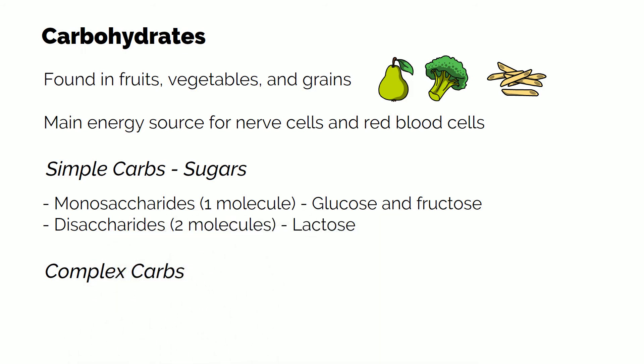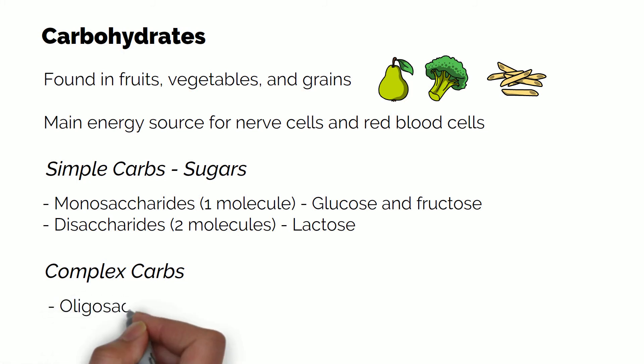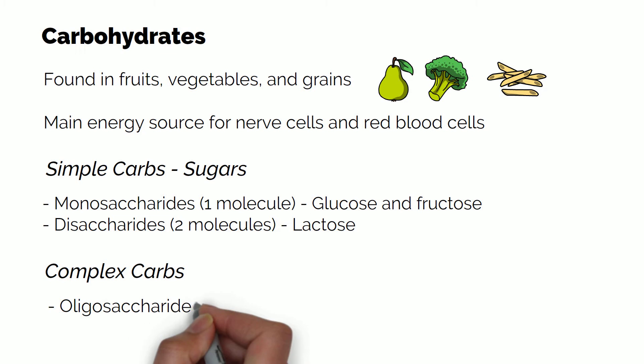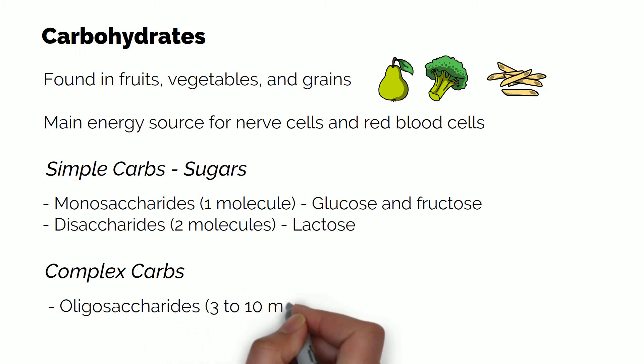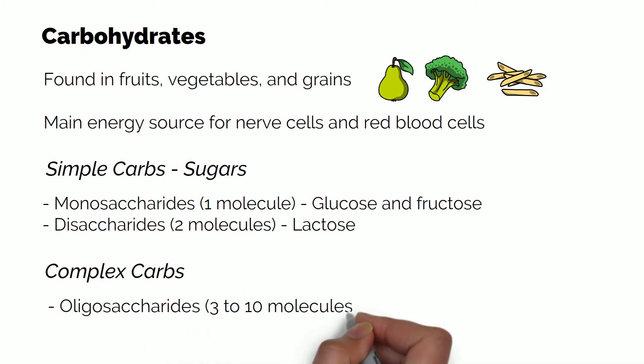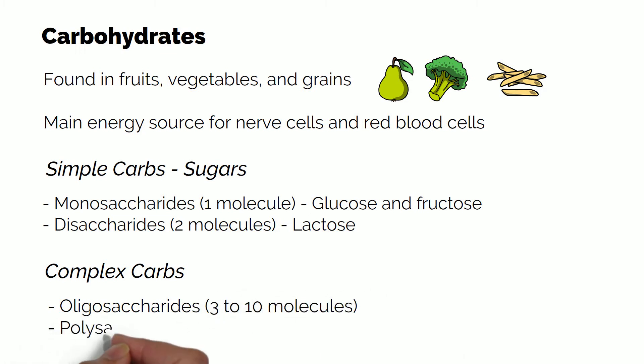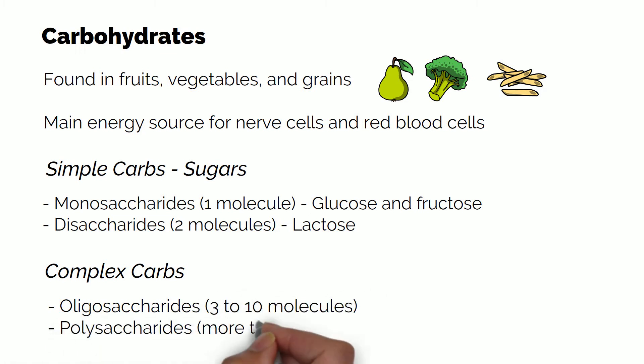Complex carbs are the ones composed of more than three molecules and can also be divided into two groups: oligosaccharides, when they have between three and ten molecules, and polysaccharides, when they have more than ten molecules.